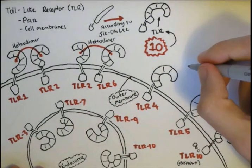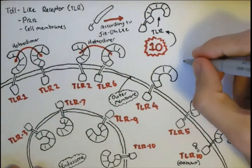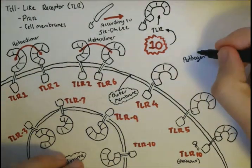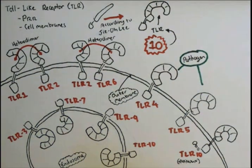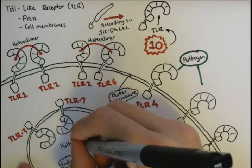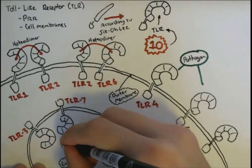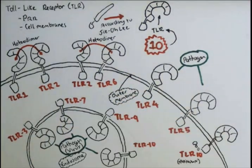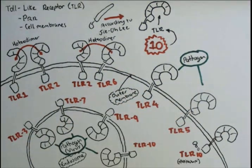PAMPs also bind to TLR4, 5, and 10, but require two of the same TLRs to attach together and attach to the pathogen in order to be activated. TLRs 3, 7, 8, and 9, which are on endosomal membranes, target viruses that enter via endocytosis, and also require both of the same TLRs to attach so that the two lower domains attach in order to be activated and initiate the process.